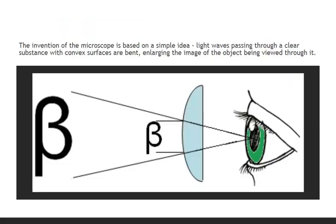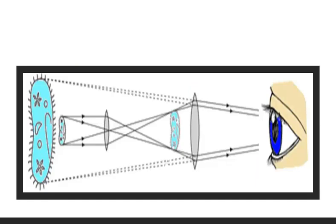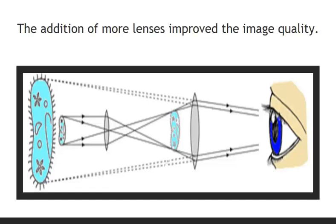The invention of the microscope is based on a simple idea. Light waves passing through a clear substance with convex surfaces are bent, enlarging the image of the object being viewed through it. The physics of magnification are virtually the same for a magnifying glass, stereo microscope, compound microscope, or an electron microscope. Light that has passed through an object or bounced off the object is collected by a series of lenses and focused into a real image. The addition of more lenses improves the image quality.